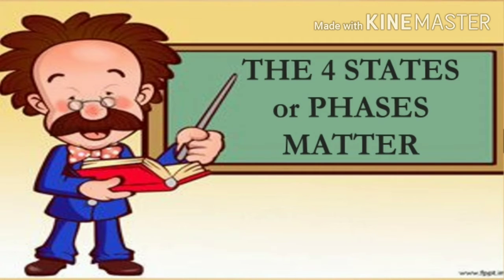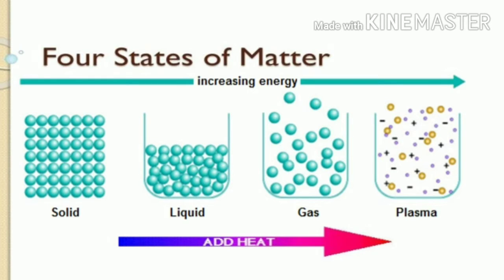What are the four states or phases of matter? The four states or phases of matter are solid, liquid, gas, and plasma.